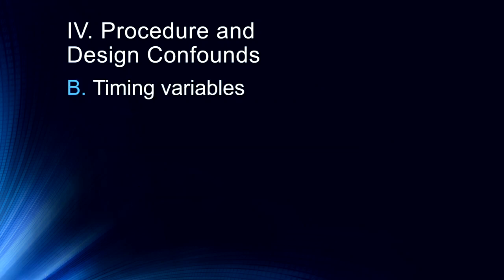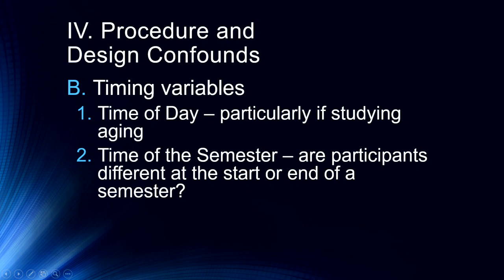Timing variables are another area where the timing of your data collection can become important. We always try to test participants at about the same time of day or within a narrow range — usually between 10 and 4. In particular, if we have participants coming back more than once, as in my smoking studies where we've had people come back twice at least a week apart, we always schedule those at the exact same time of day to eliminate time of day as a potential confound between the two study sessions.